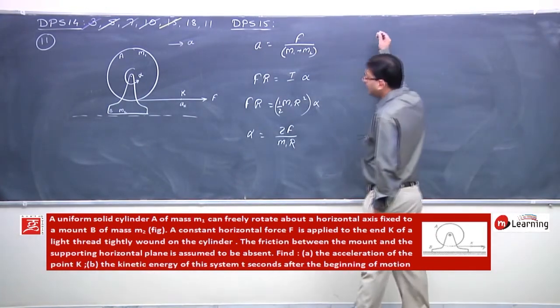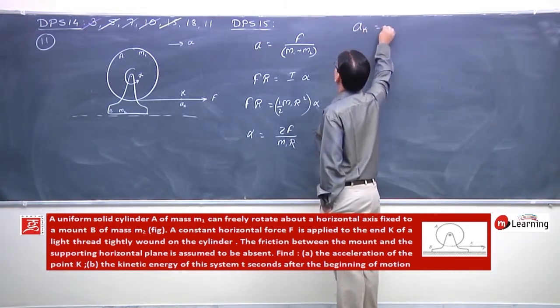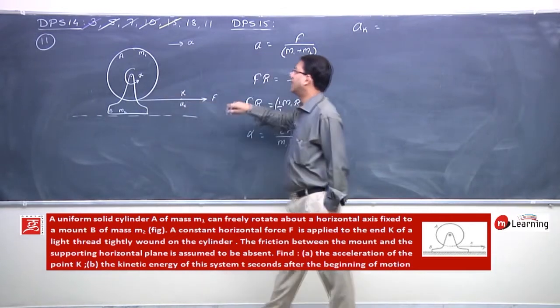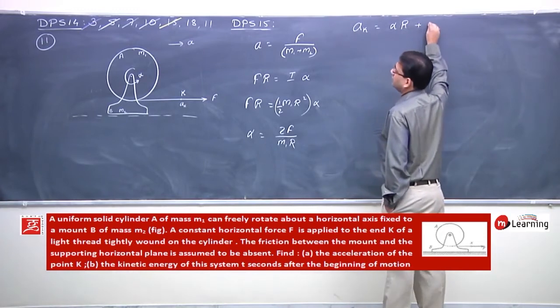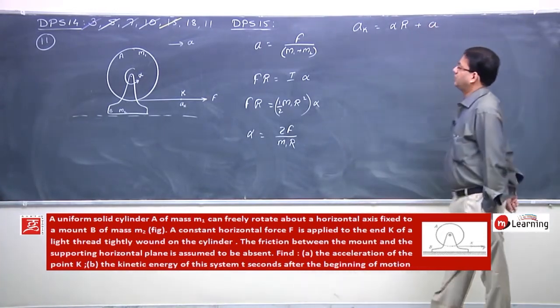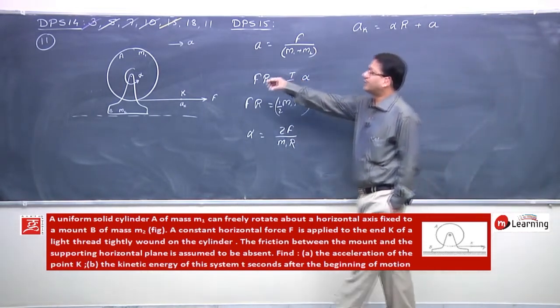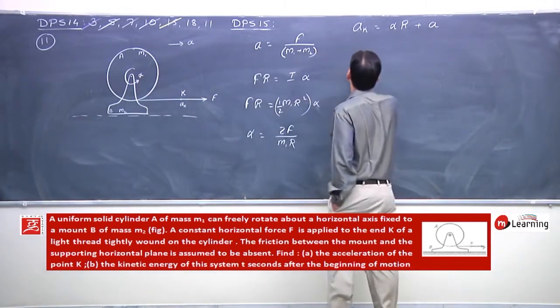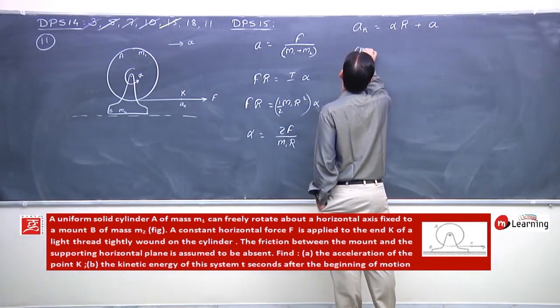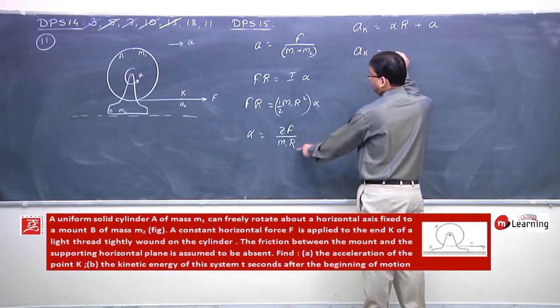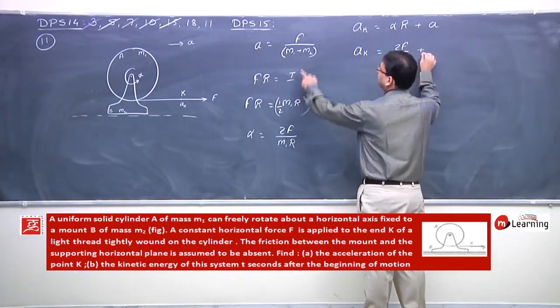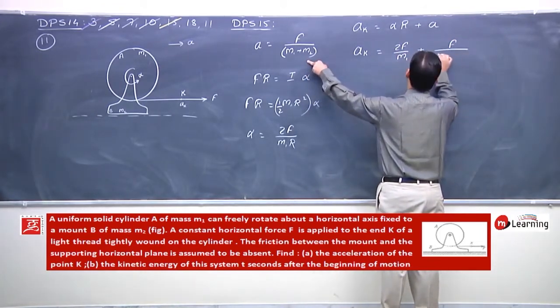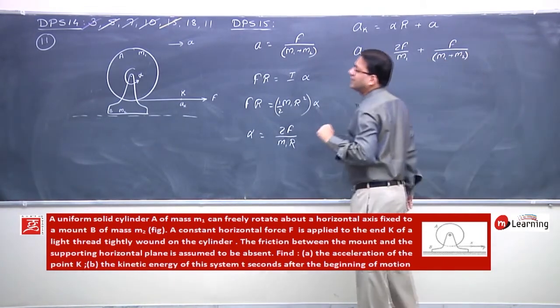Point K will have acceleration. When the system rotates with alpha, it will be alpha into R plus A. The complete system accelerates with A, and rotates with alpha. So K's acceleration would be alpha into R, which is 2F by M1, plus acceleration A, which is F by M1 plus M2. So this is the acceleration of point K.